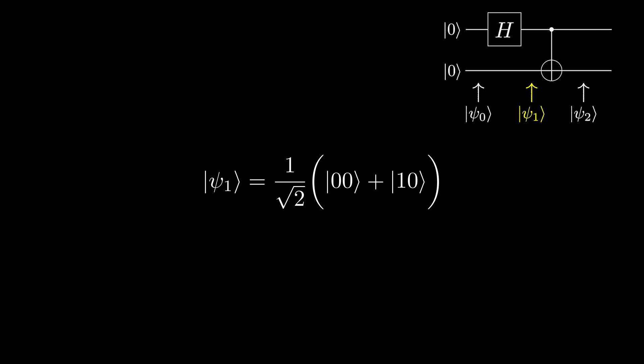Now at psi sub two, we apply a CNOT, with the first qubit being the control and the second being the target. This means that the zero zero state stays the same, since the control is zero, but for the one zero state, the control is one, so the second qubit flips to a one. This leaves us with the state one on root two zero zero plus one one.